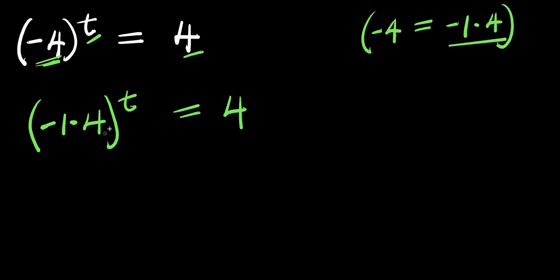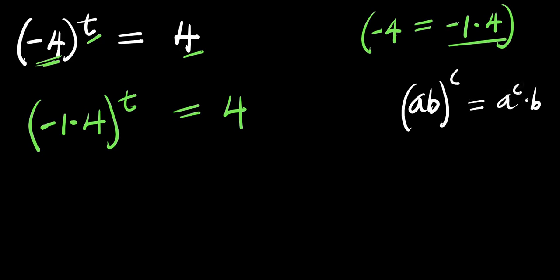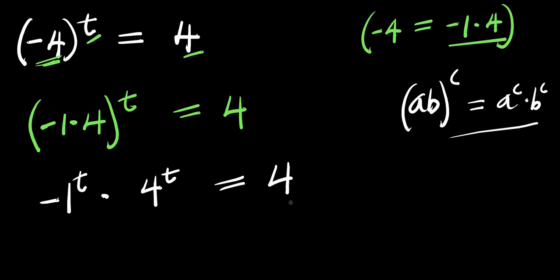From here, what we can do is to apply this identity: if you have a times b raised to the power of c, this equals a to the power c times b to the power c. Applying this identity here, we have negative 1 to the power of t times 4 to the power of t equals 4.